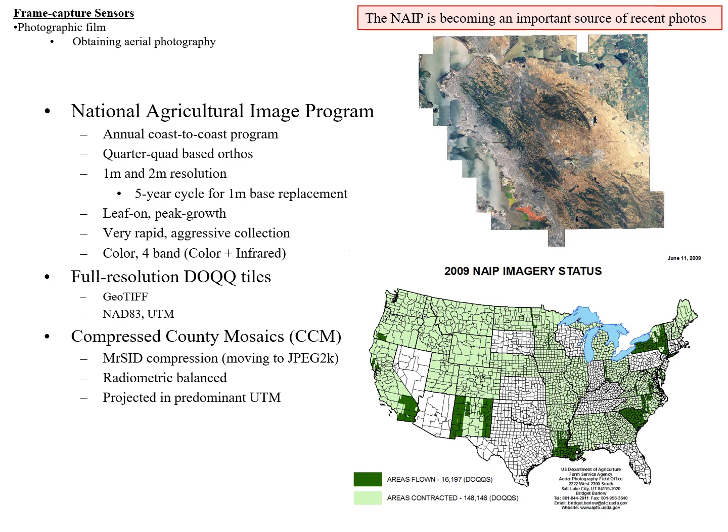NAIP imagery is leaf-on and at peak growth, collected over a very short period so you get peak growth regardless of whether you're near the start or end of a given year's collection. You can get it as full spatial resolution digital orthophoto quad tiles or as compressed county mosaics. With compressed mosaics you lose some spectral detail that you'd want for digital processing, but you can view a large area with relatively small files.